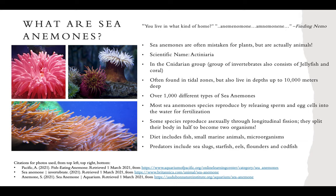Their diet includes fish, small marine animals, and microorganisms. Predators that eat sea anemones include sea slugs, starfish, eels, flounders, and codfish — it varies depending on the environment and what's available.